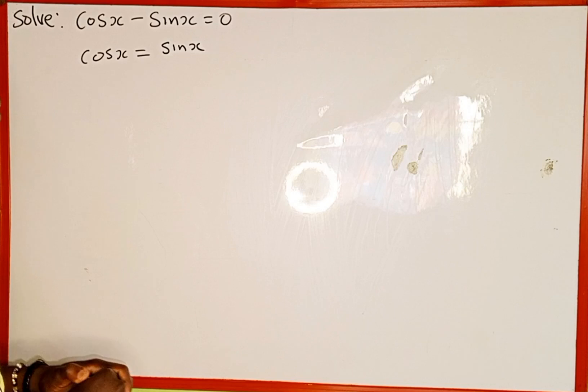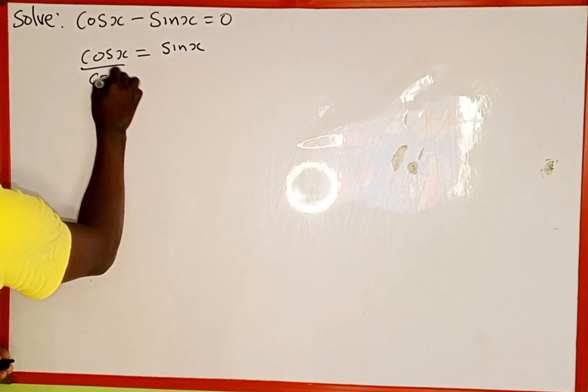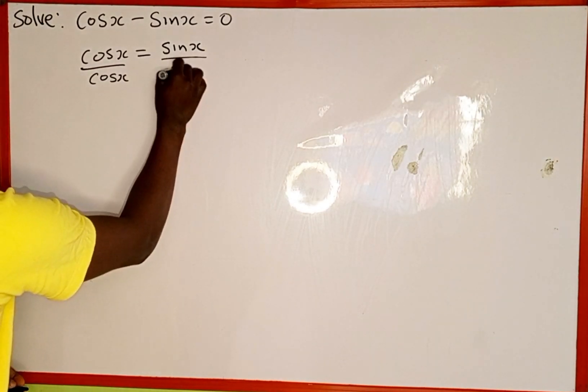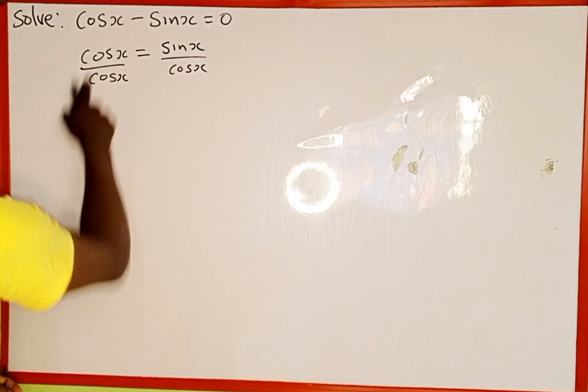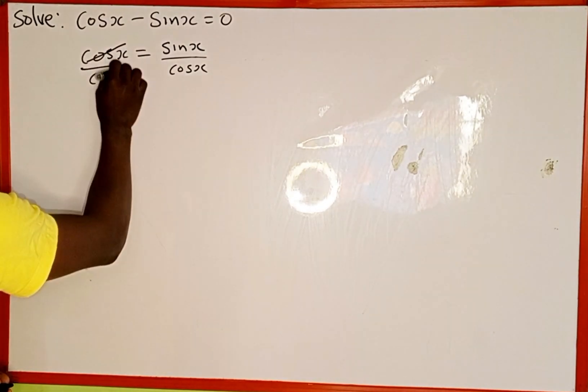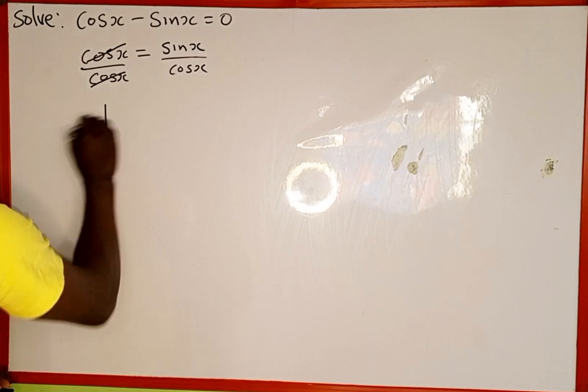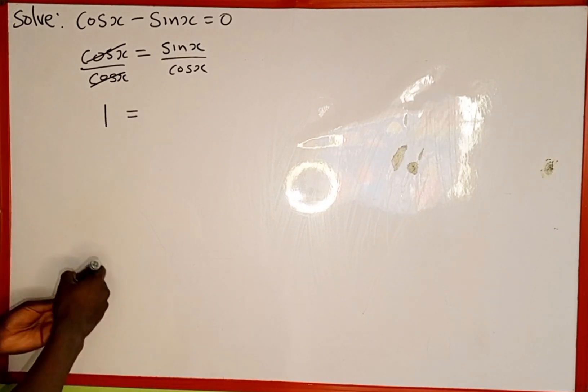So the next thing we are going to do is to divide both sides of this equation by cos x. We divide the left hand side by cos x, also the right hand side by cos x. So this is division. This cos x is going to cancel this cos x. So in the left hand side, it is going to be 1.